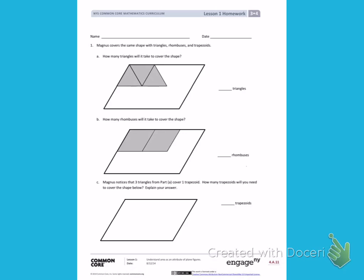Number 1. Magnus covers the same shape with triangles, rhombuses, and trapezoids. Letter A: How many triangles will it take to cover the shape?